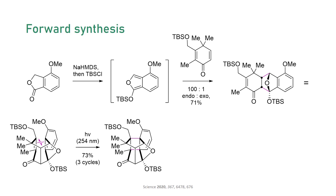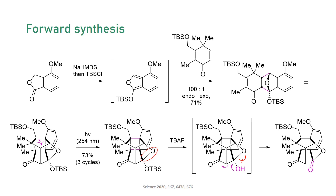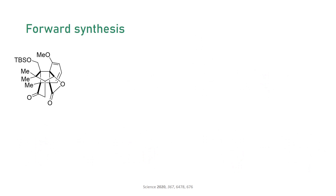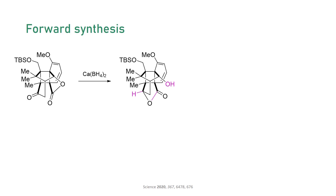The next task was the construction of the carbon framework, which required opening of the lactol. Despite extensive experimentation, the team only observed fragmentation of the skeleton after deprotection, delivering this ketolactone. Sometimes unwanted reactions happen in synthesis, and it might make sense to just roll with the inherent reactivity of molecules. The team did exactly this, and cleverly used the ketolactone to open the bond that they were not able to break earlier, through a highly stereoselective reduction with calcium borohydride, after which an intramolecular trans-lactonization followed directly in situ.